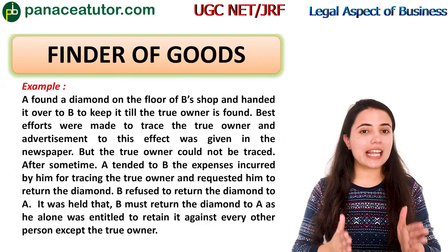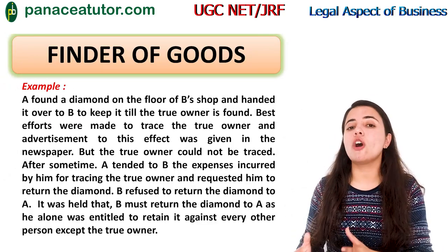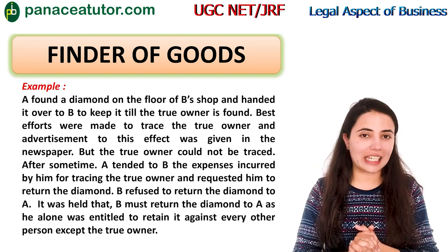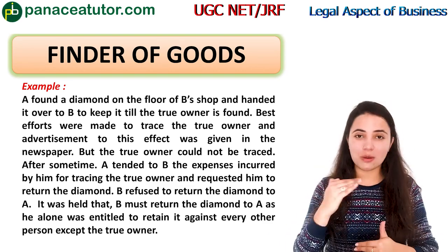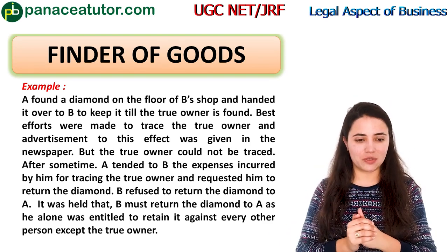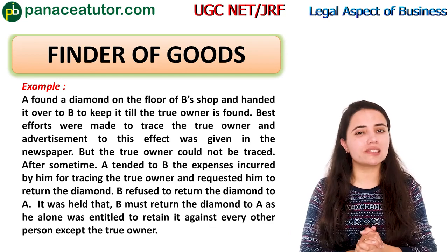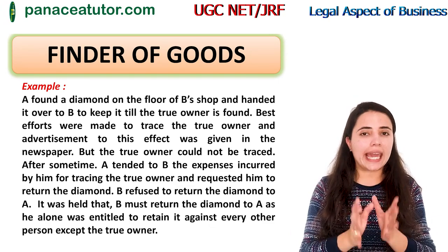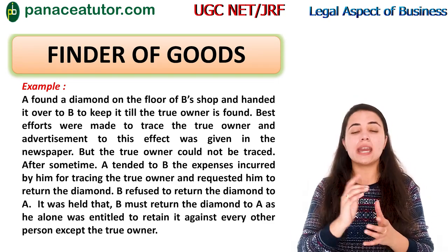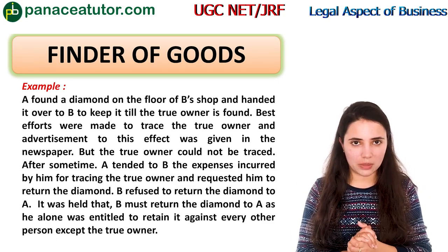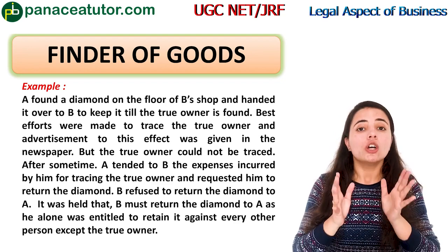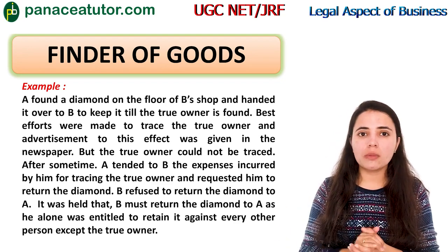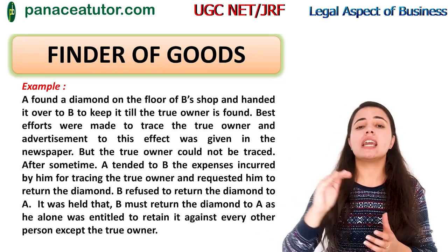The next kind is the finder of goods. We will understand this through an example. A is a person who found a diamond near a shopkeeper's place. A gave the diamond to B, the shopkeeper, and said it is not his. B told A: go and try to find the real owner, and if you can't find one, you may keep it.